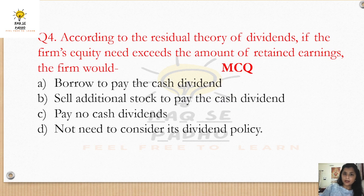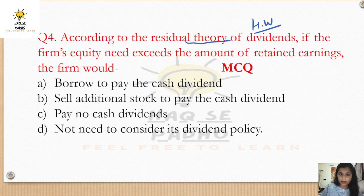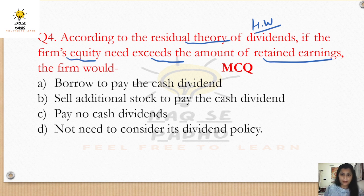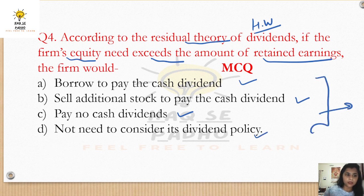Now, a final question for you to answer in the comments: according to the residual theory of dividend, if a firm's equity needs exceed the amount of retained earnings, what will the firm do? Options are: (a) borrow money to pay cash dividend, (b) sell stocks to give cash dividend, (c) give no dividend, or (d) consider a different policy. Think about it — if the company's investment needs are greater than retained earnings, should it give a dividend or not?